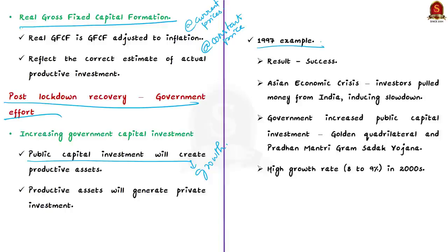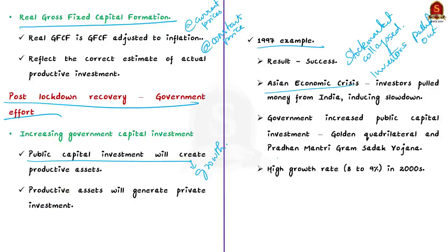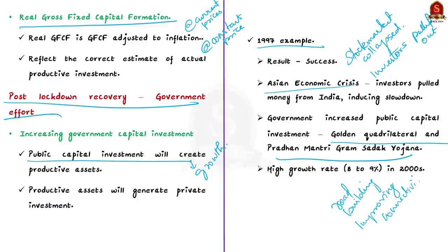In 1997, the Asian financial crisis happened. Stock markets in all Southeast Asian countries collapsed, resulting in investors pulling out from the Indian stock market as well. The Atal Bihari Vajpayee government responded by increasing public investment through famous programs like the Golden Quadrilateral and Pradhan Mantri Gram Sadak Yojana, focusing mainly on road building and improving connectivity. These programs helped in India's economic revival, and in almost all years of the 2000s, India experienced a growth rate of 8 to 9 percent. This is why the present government is also focusing on investment-led economic growth.